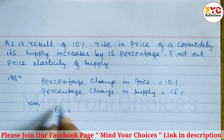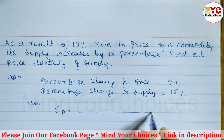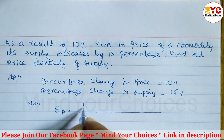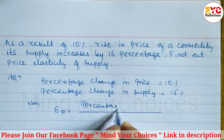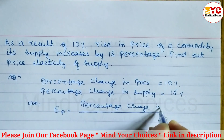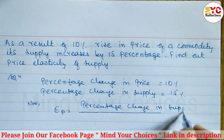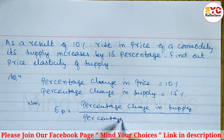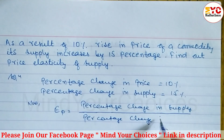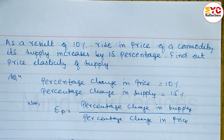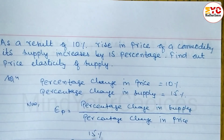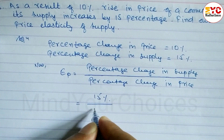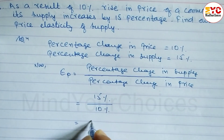We know that price elasticity of supply is denoted by Ep, and the formula is: Ep = percentage change in supply divided by percentage change in price. Here, percentage change in supply is equal to 15 percent, divided by percentage change in price which is 10 percent. When you divide these two, we get 1.5 as your answer.